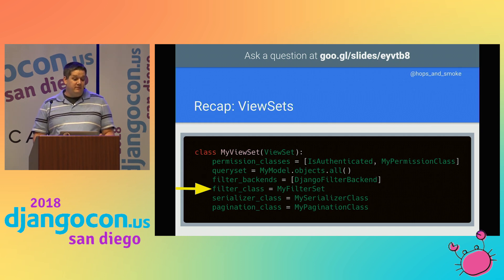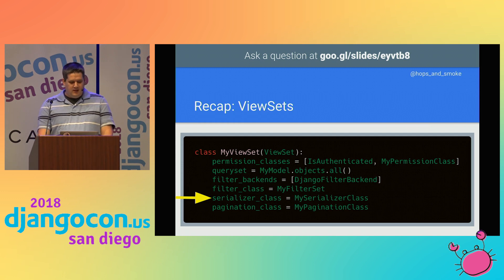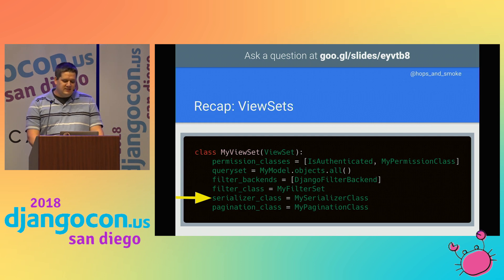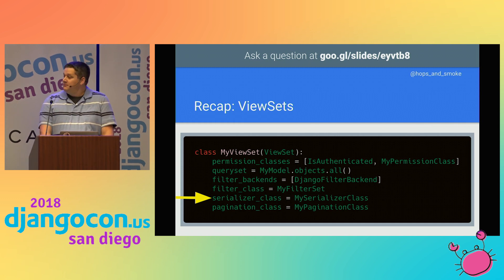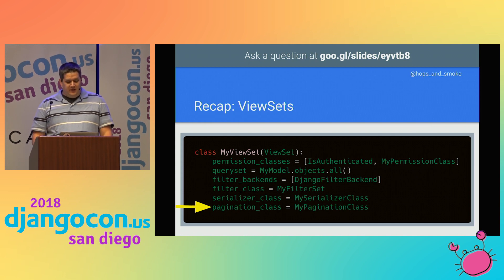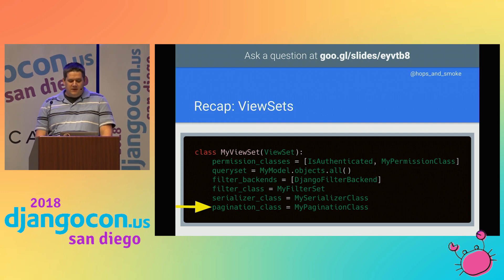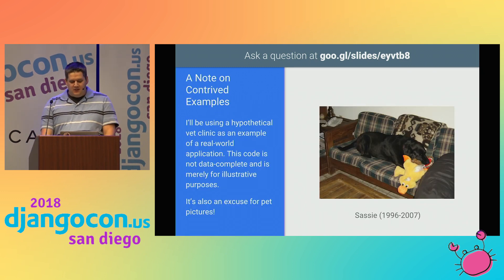In the case of list actions, the ViewSet will then pass the query through each filter backend you specified, which modifies the query set appropriately. If you're using the Django filter backend — which you probably will be — it looks up the filter class attribute and uses that to modify the query set. Next, the ViewSet passes the query set result into the serializer class, which converts from complex data types into easily serializable types — things like strings, numbers, booleans, and null. And if you're using a list route, it feeds the pagination class into the serializer so it only has to serialize a subset of the query set, assuming you have more results than your pagination allows.